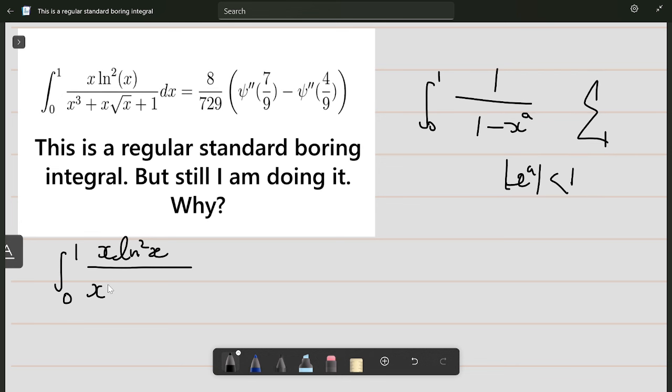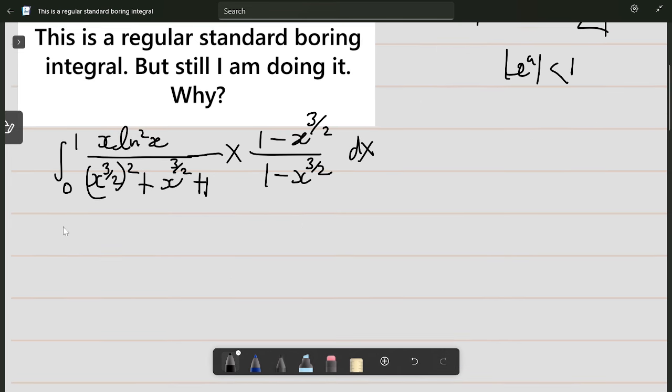You can notice that the first term is x^(3/2), second term is x^(3/2), and third term is plus 1. If you multiply by 1 - x^(3/2), this will simplify. This will be the integral from 0 to 1 of x ln²x times (1 - x^(3/2)). This is a³ - b³ form: a² + ab + b². Now I can use infinite geometric series.